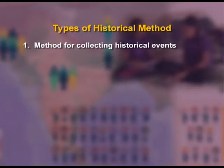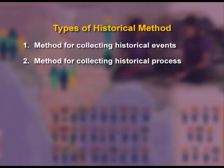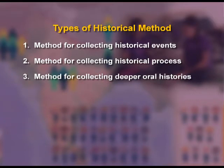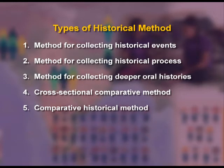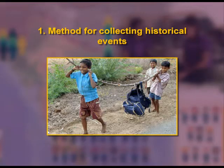Types of historical method: First, method for collecting historical events; Second, method for collecting historical processes; Third, method for collecting deeper oral histories; Fourth, cross-sectional comparative method; Fifth, comparative historical method. The first type — method for collecting historical events — is used to collect particular data and examine particular events which occurred over short spans of time.